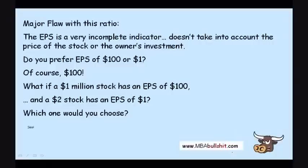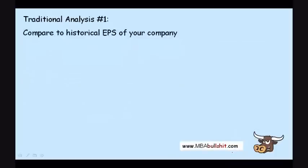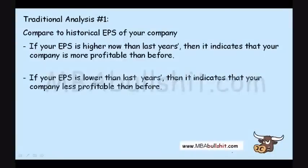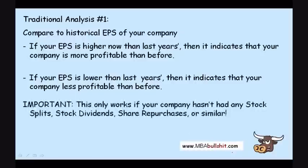So we choose the second option. How do we analyze EPS traditionally? First, compare the historical earnings per share of the company over time. If the earnings per share is lower than last year's, it indicates the company is less profitable than before. There is an important caveat: this only works if the company has not had any stock splits, stock dividends, or share repurchases, because those events complicate the number of shares outstanding.